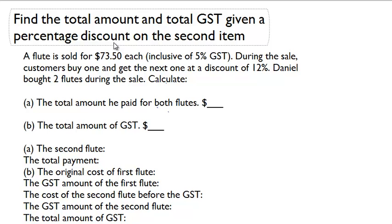Find the total amount and total GST given a percentage discount on the second item. A flute is sold for $73.50 each, inclusive of 5% GST. During the sale, customers buy one and get the next one at a discount of 12%. Daniel bought two flutes during the sale. We're going to calculate two things: A, the total amount he paid for both flutes, and B, the total amount of GST.